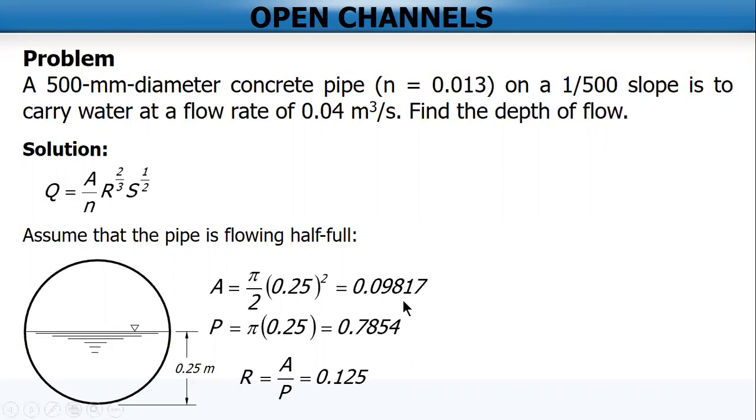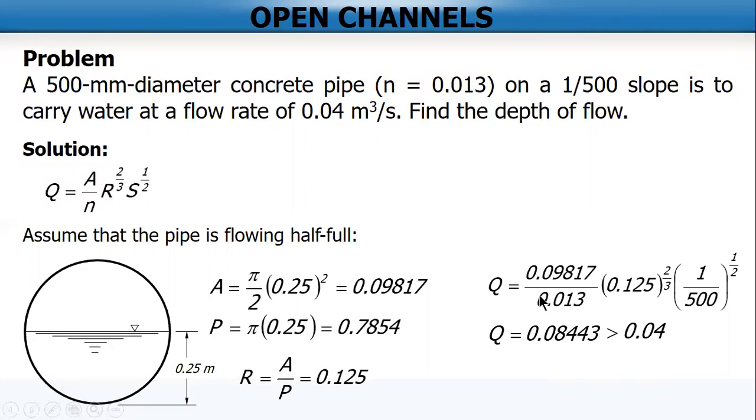So we are now ready to substitute these values: A, R, given S and N. We get Q equal to A over N times R raised to 2 thirds, S raised to 1 half, and the value is 0.08443. So the flow rate if half full is 0.08443, but the given is 0.04, so it's greater than 0.04.